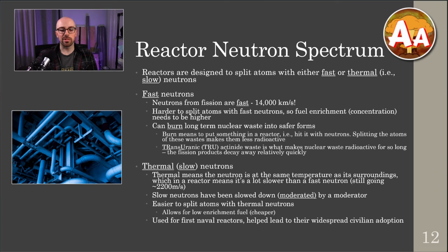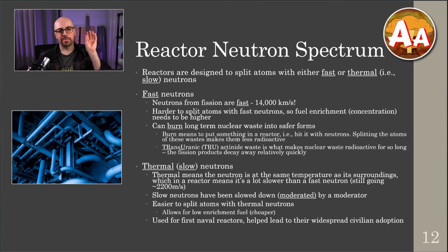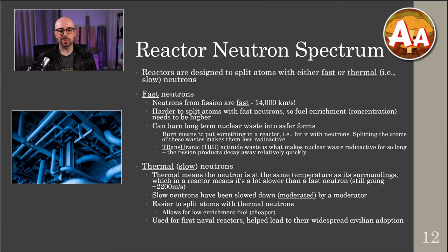The reason you slow neutrons down is because it's much easier to split atoms with thermal neutrons — the ball analogy again: a lot easier to catch a slow ball, a lot easier to split atoms with thermal or slow neutrons. I'll probably bounce back and forth between thermal and slow in this presentation, but thermal is the technical term while slow is just as descriptive. You can use low enrichment fuel when you have thermal neutrons, which is cheaper.